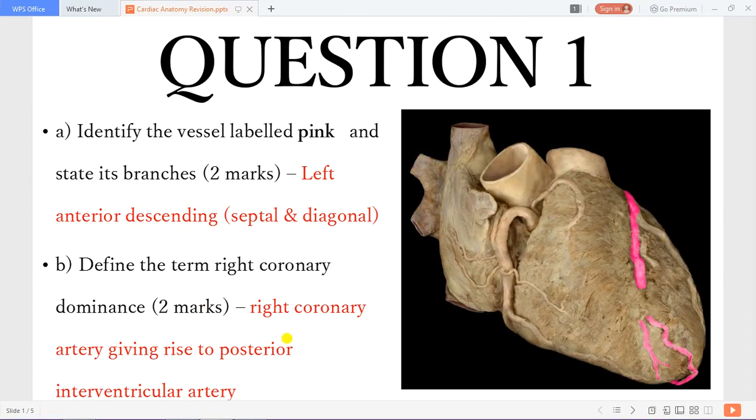The term right coronary dominance refers to when the right coronary artery gives rise to the posterior interventricular artery.